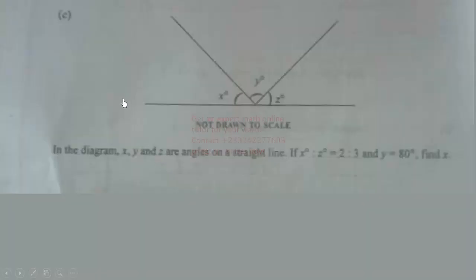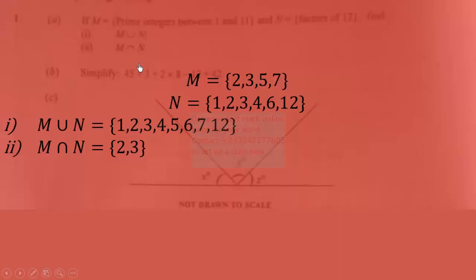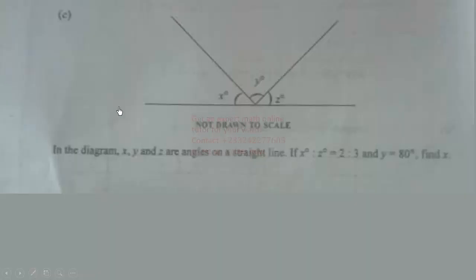Now let's proceed. This is the part c of the question. In the diagram, x, y, and z are angles on a straight line. If x degrees to z degrees is equal to 2 is to 3, and y is equal to 80 degrees, find the value of x.